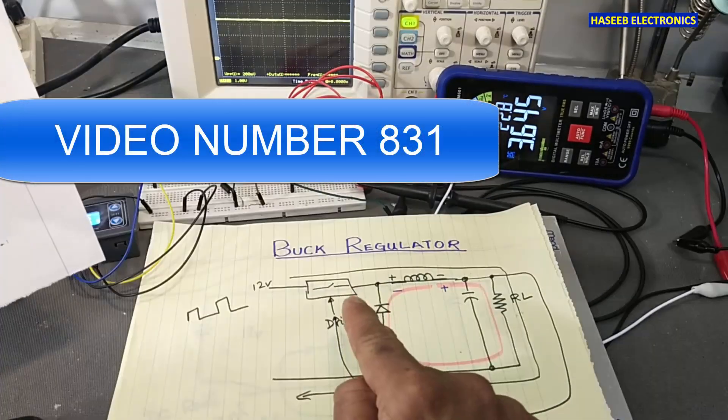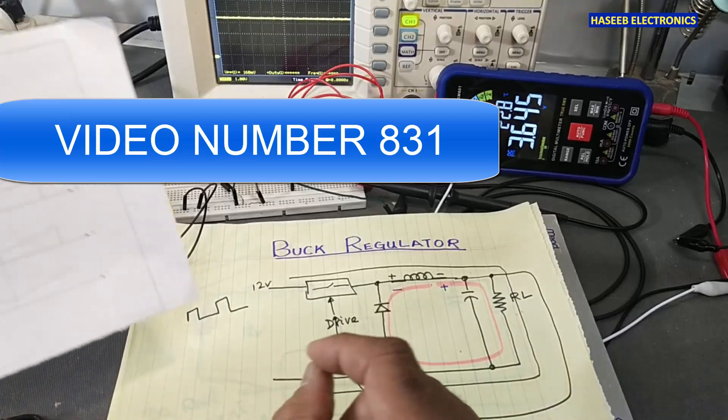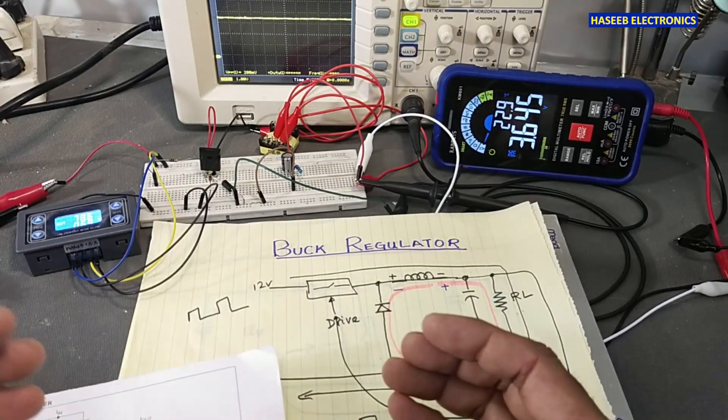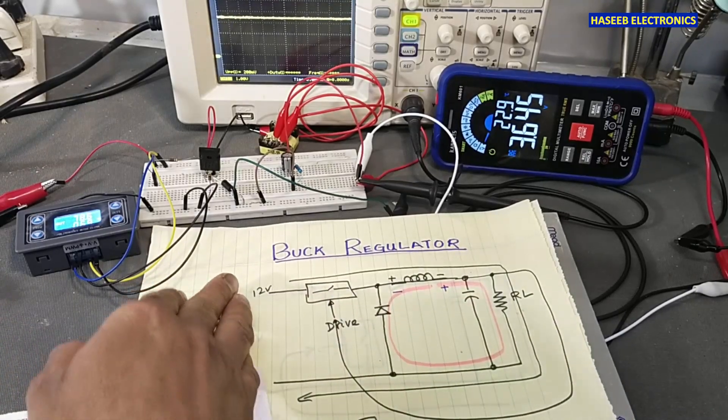Friends, welcome back to my channel. In my last video we discussed buck regulator. Buck regulator is a topology circuit configuration where we apply DC voltage at input and it steps down the voltage and provides to the load.